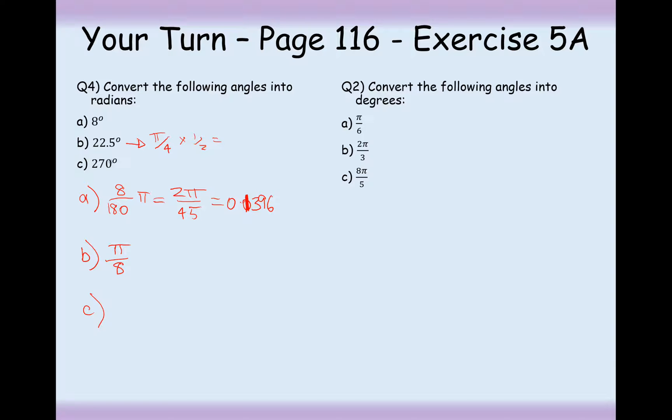And part C, well I know that that's just 90 plus 180. 90 is π by 2, 180 is π, so add these two together and we get 3π by 2. So a few different ways of getting to your answer there.